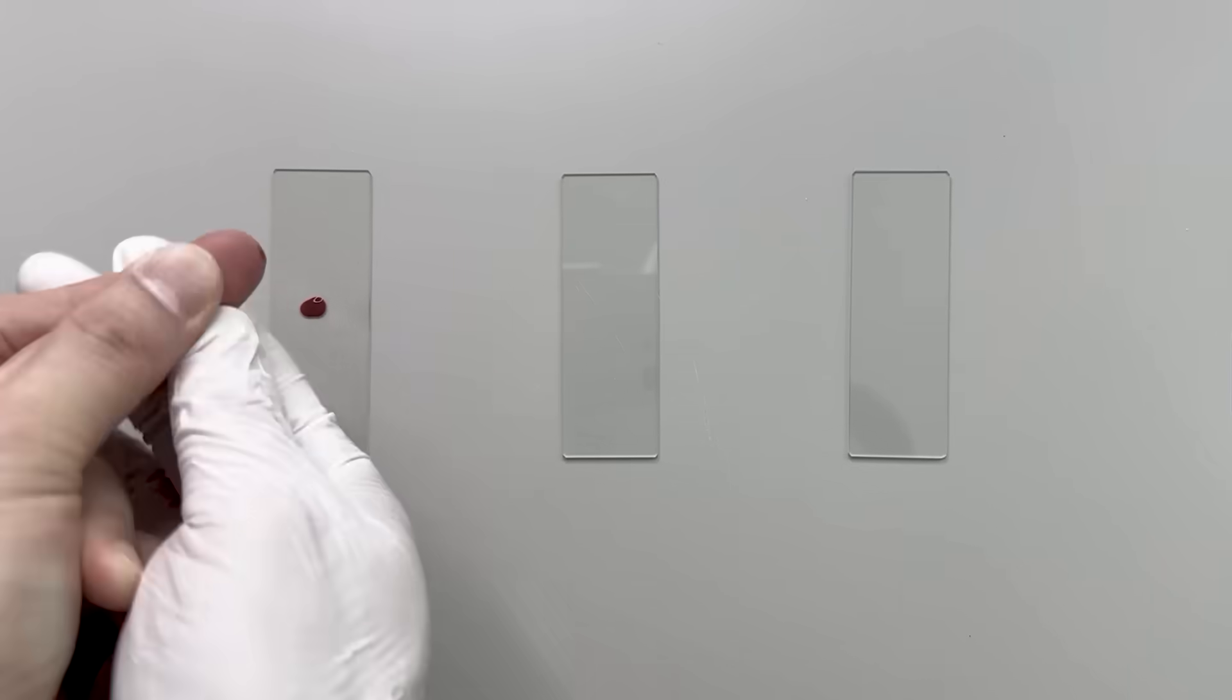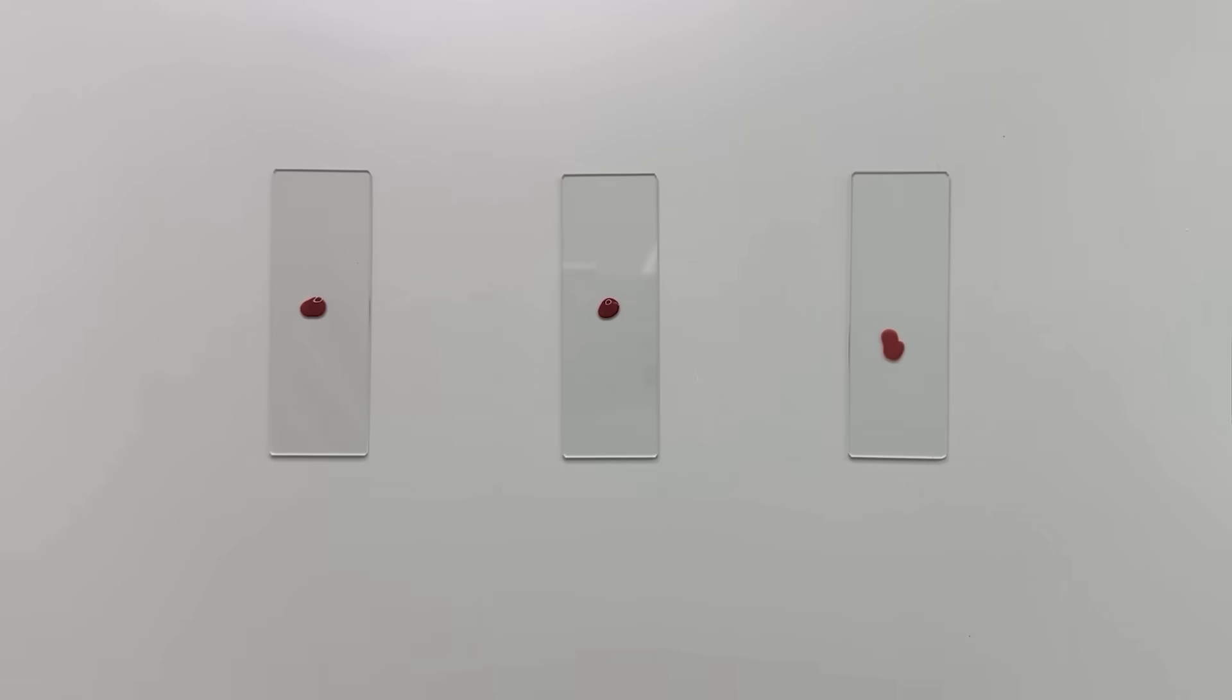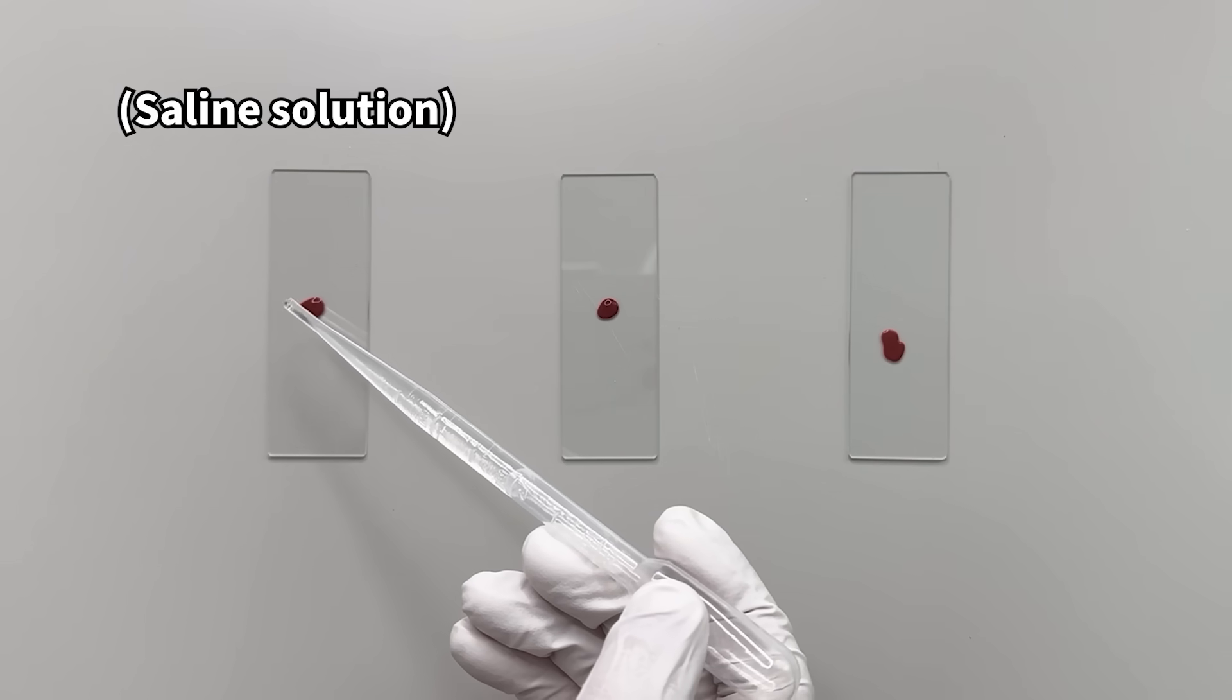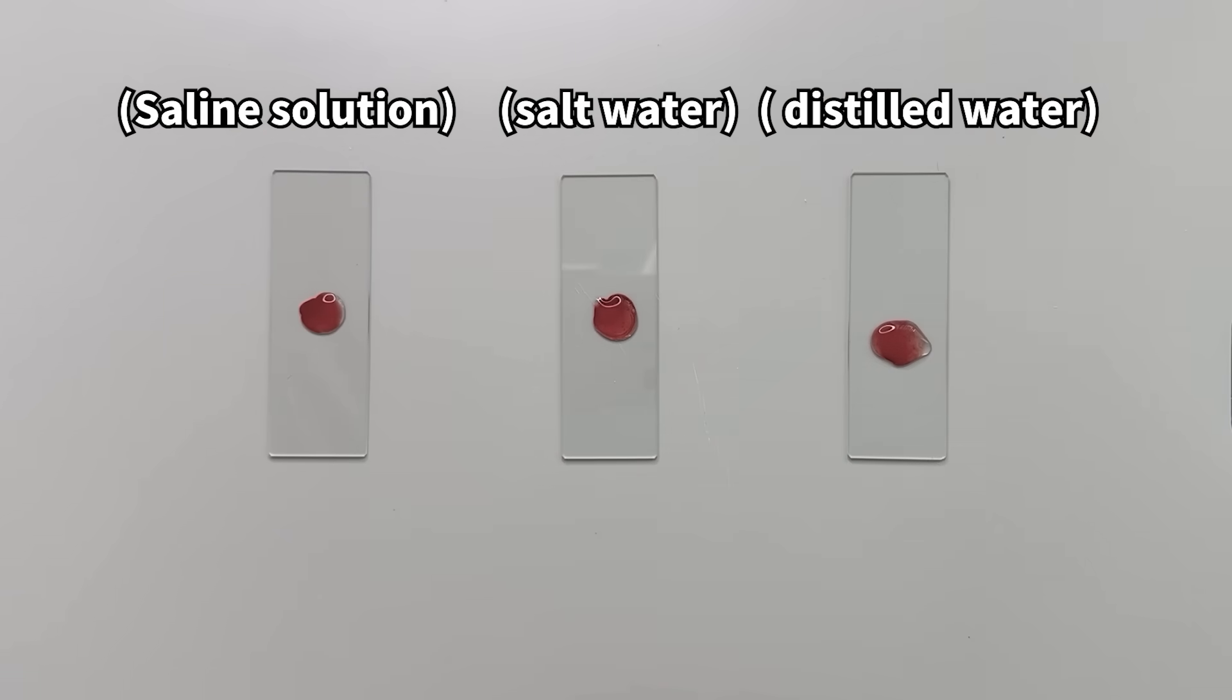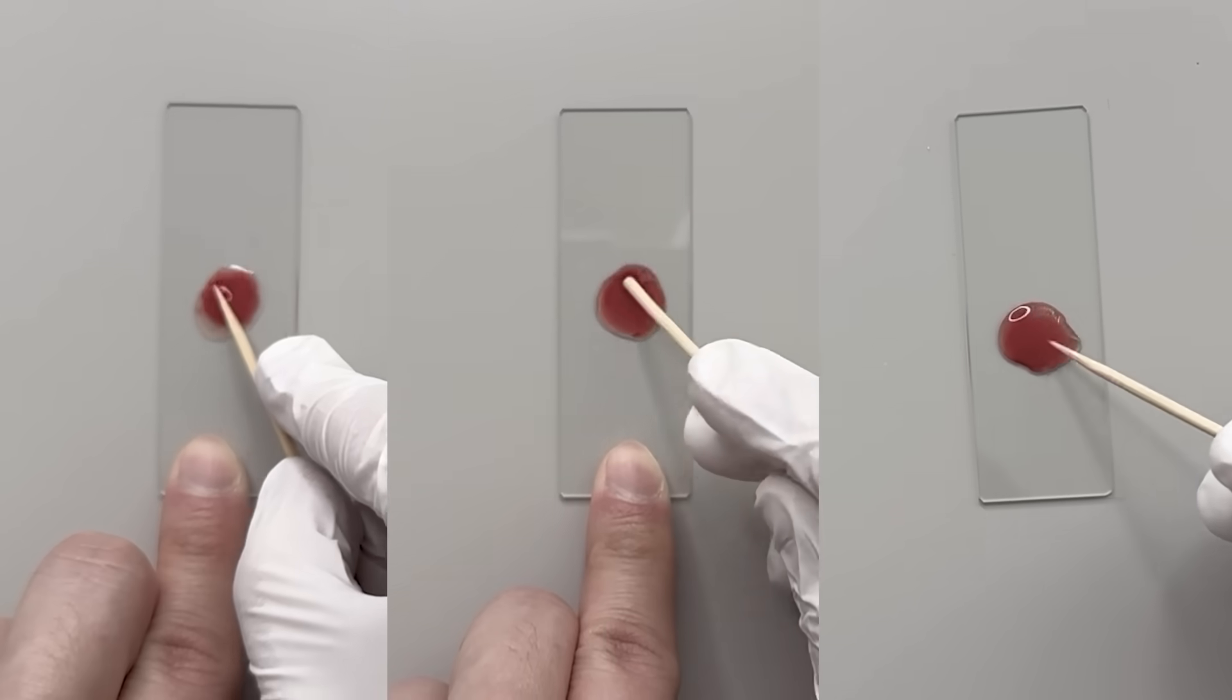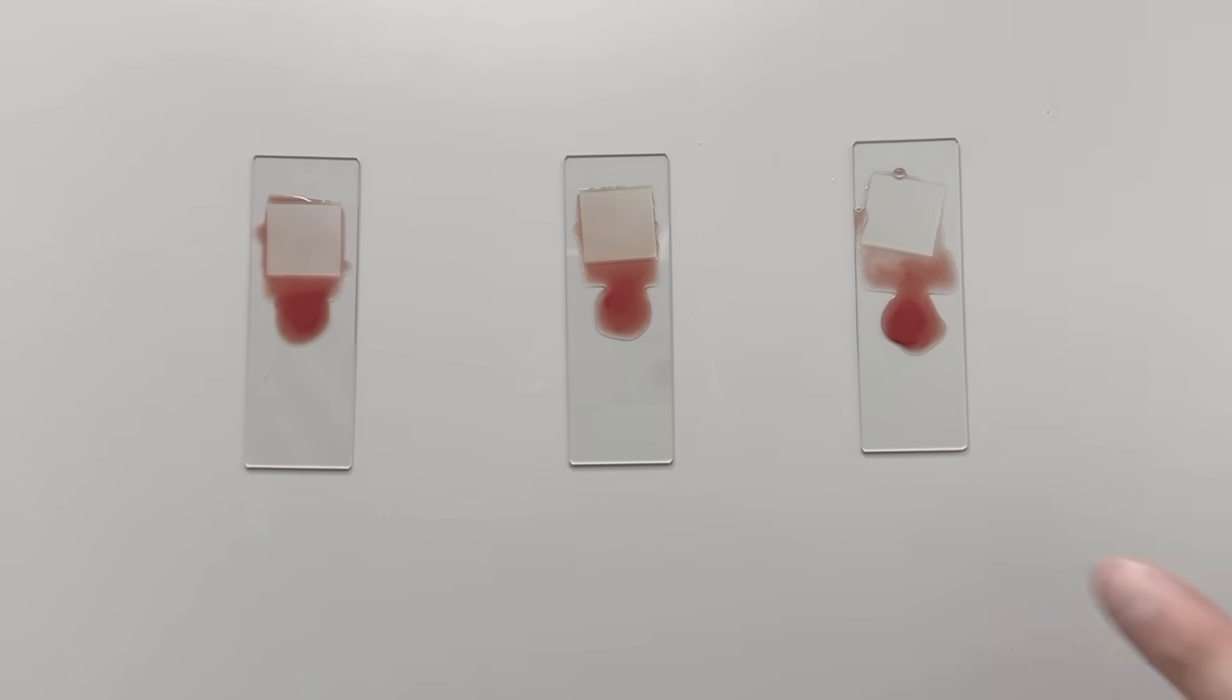I distributed the blood equally among three glass slides. Then I added a drop of saline, a drop of salt water (10%), and a drop of distilled water to each, and mixed them, covering each with a cover glass.